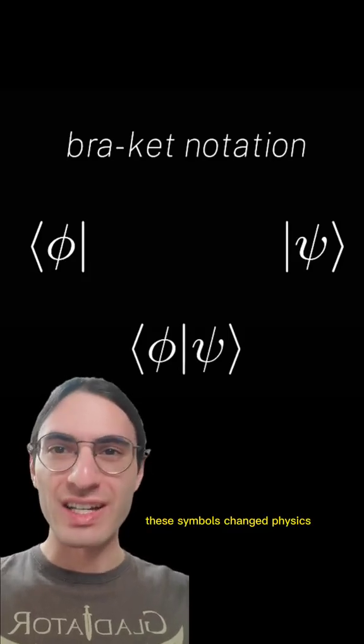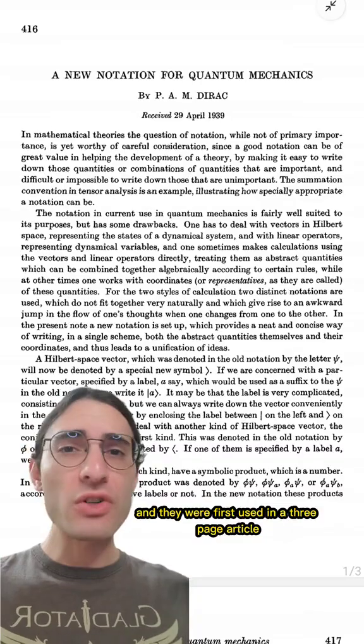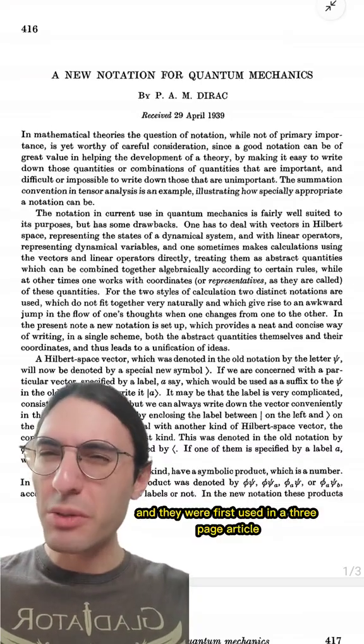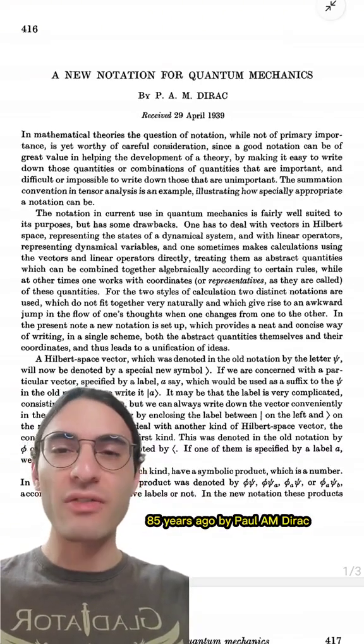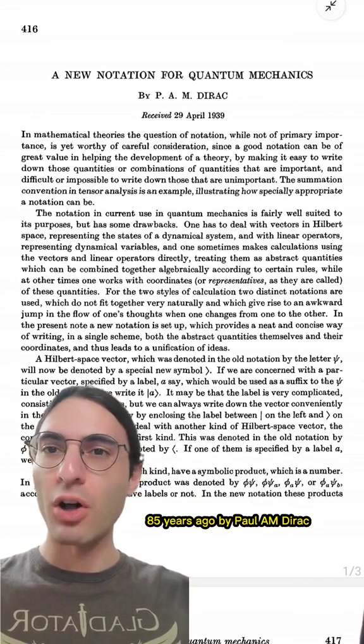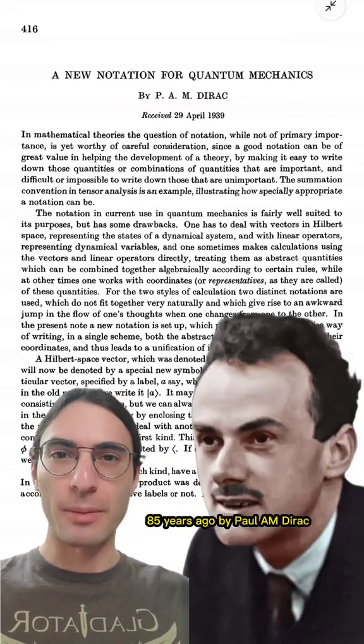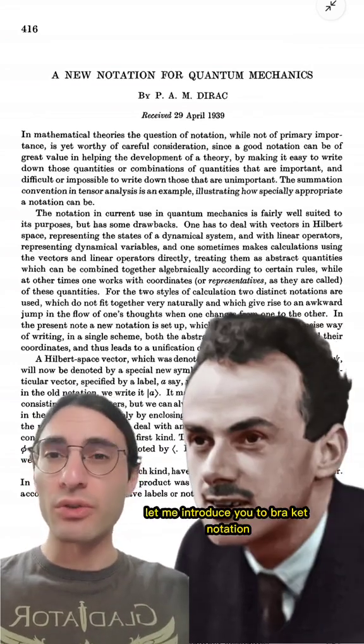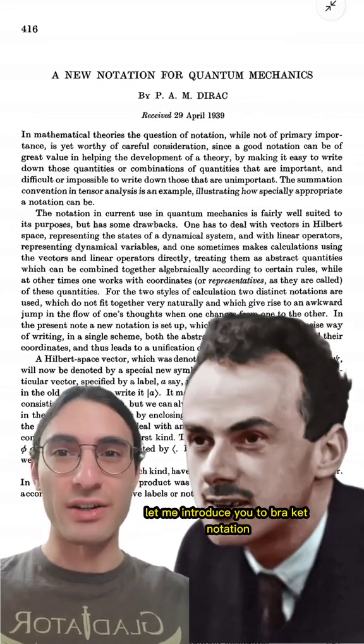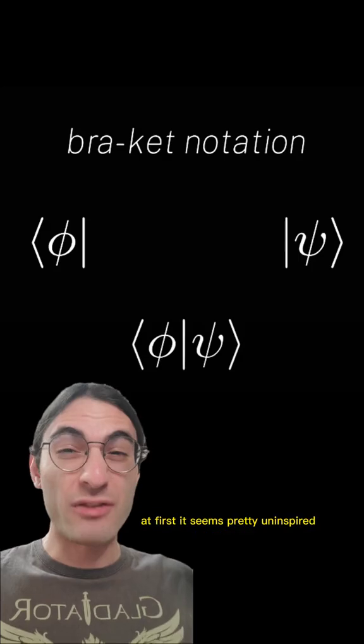These symbols changed physics, and they were first used in a three-page article 85 years ago by Paul A.M. Dirac. Let me introduce you to bra-ket notation.